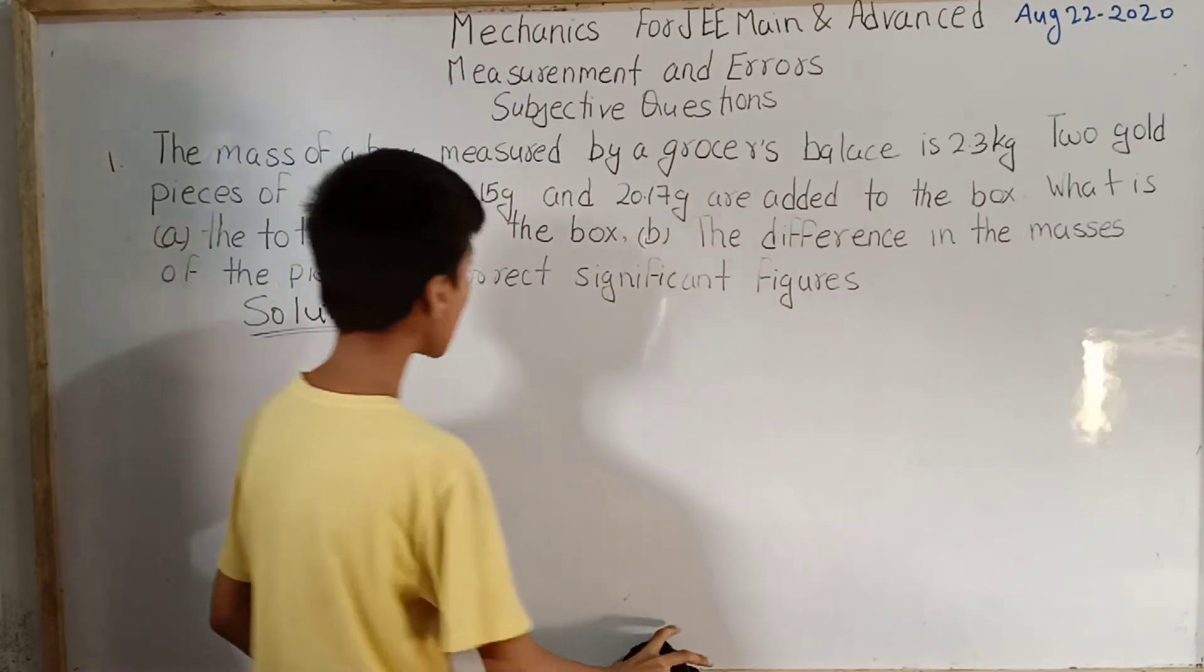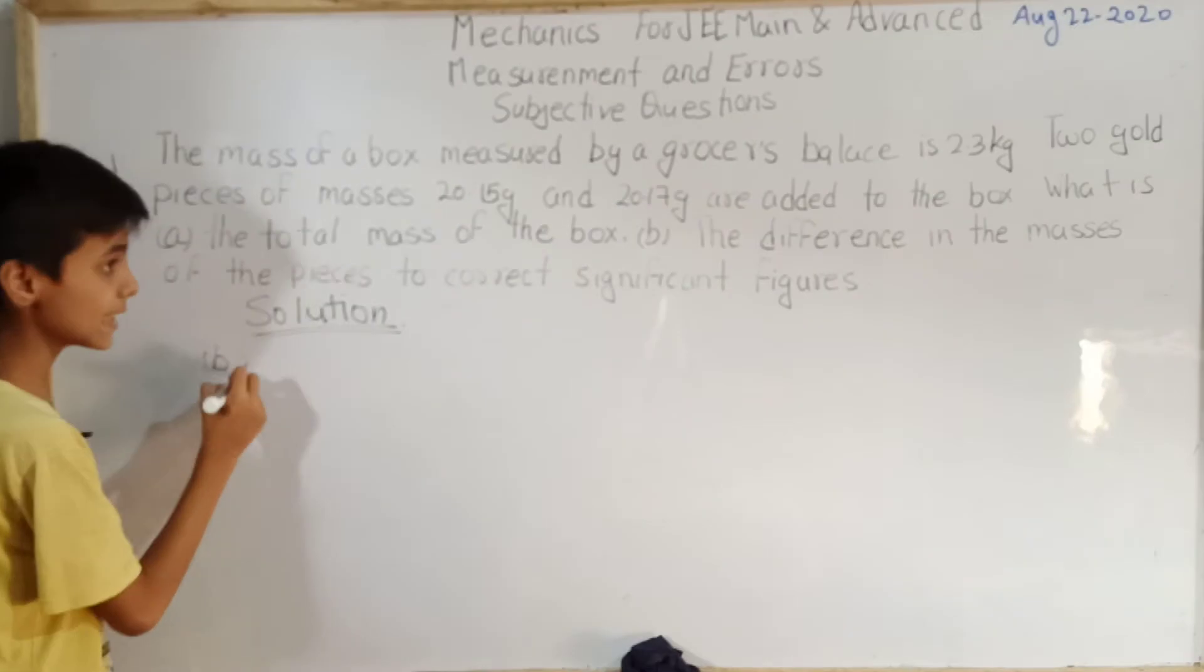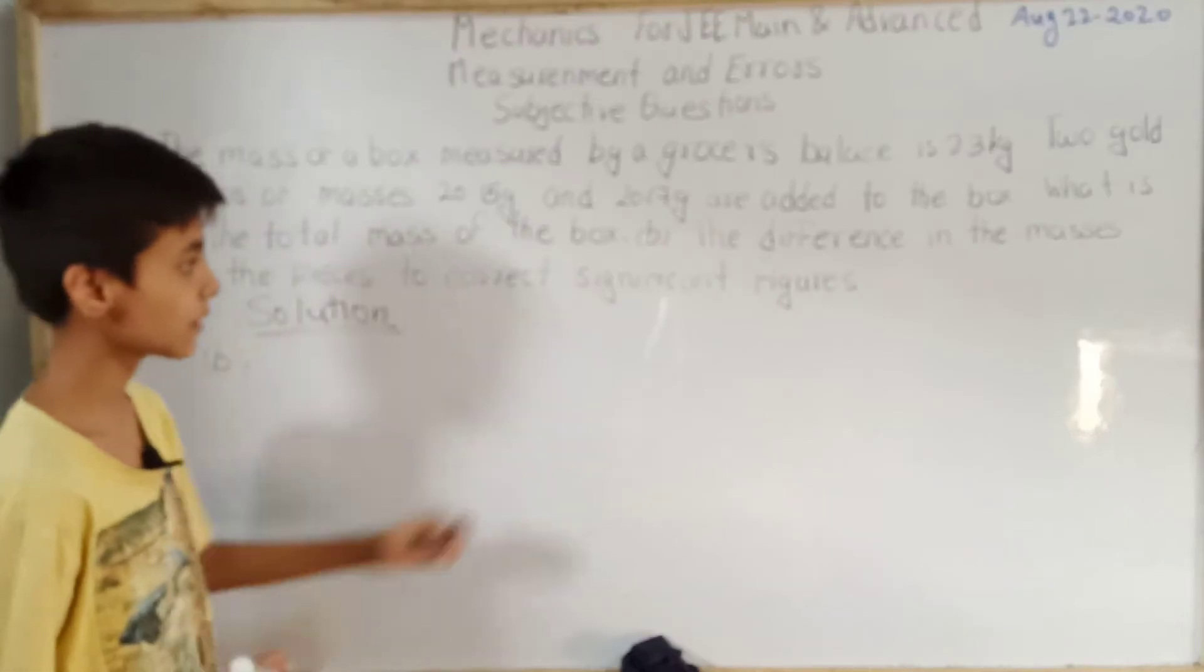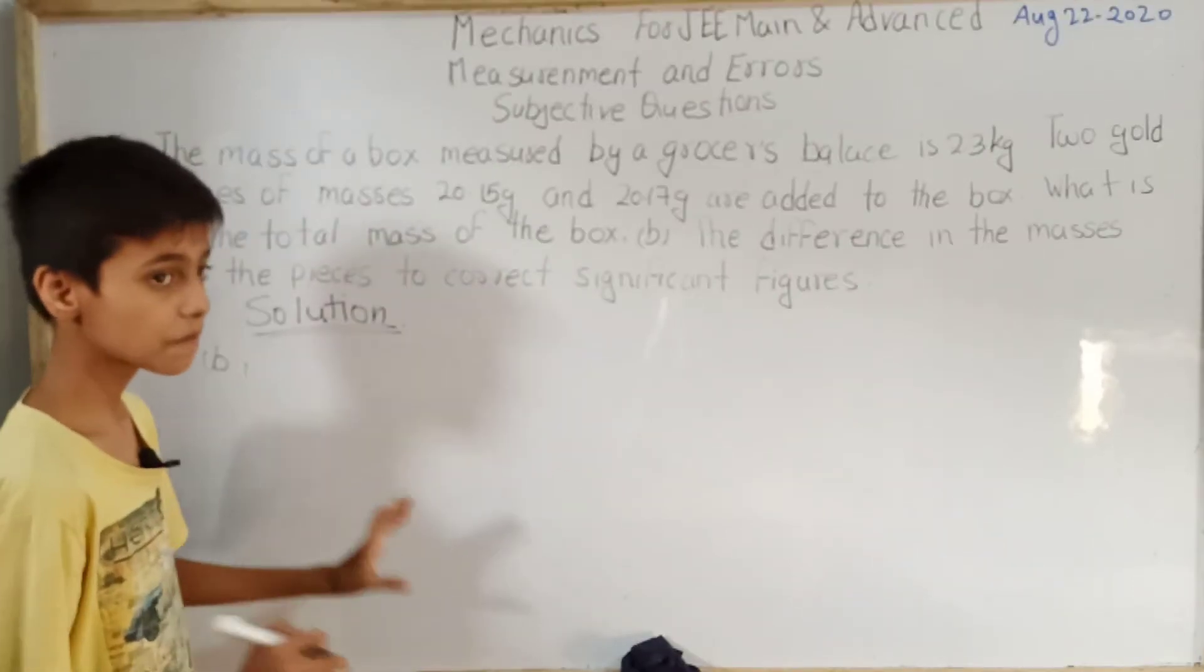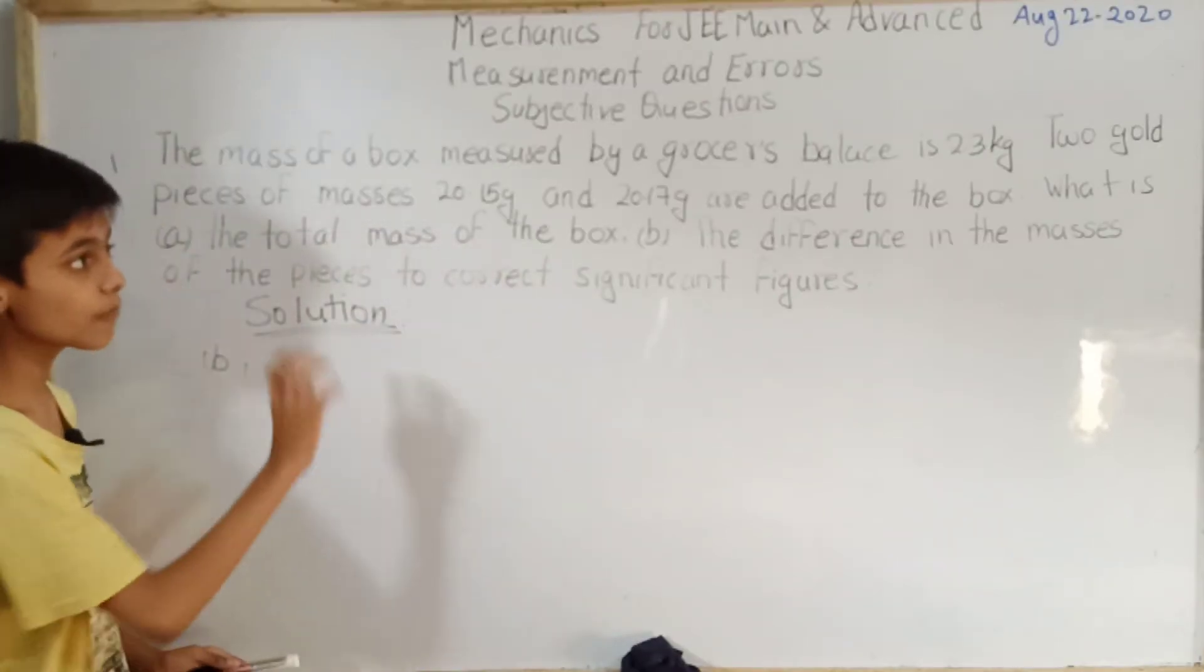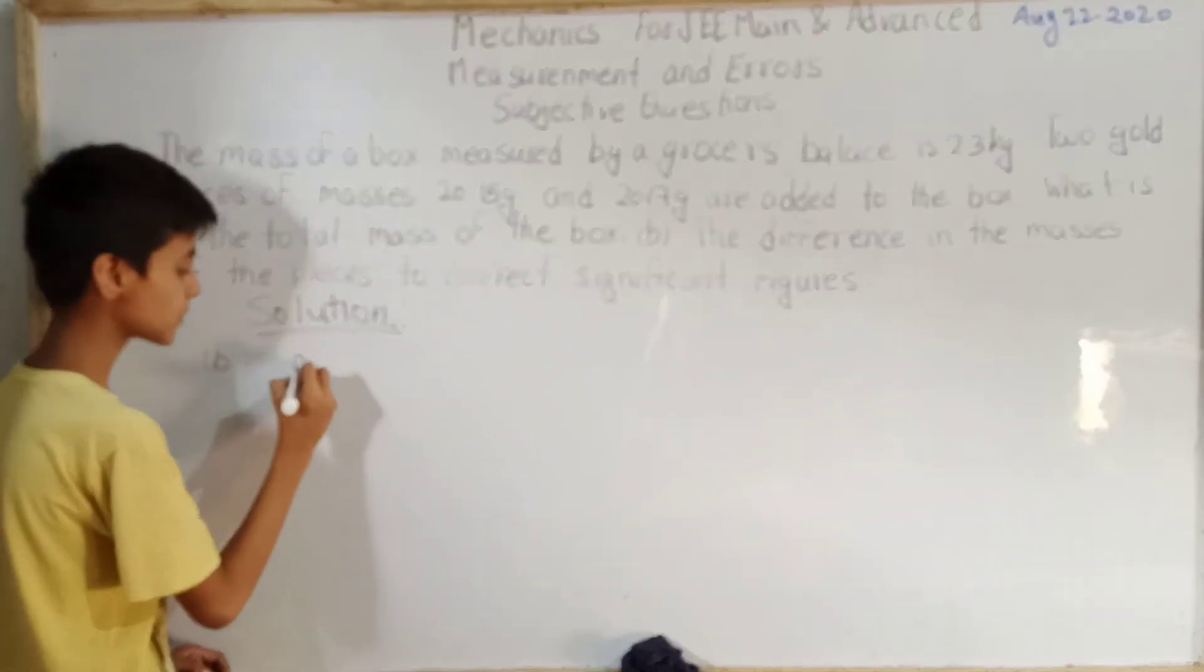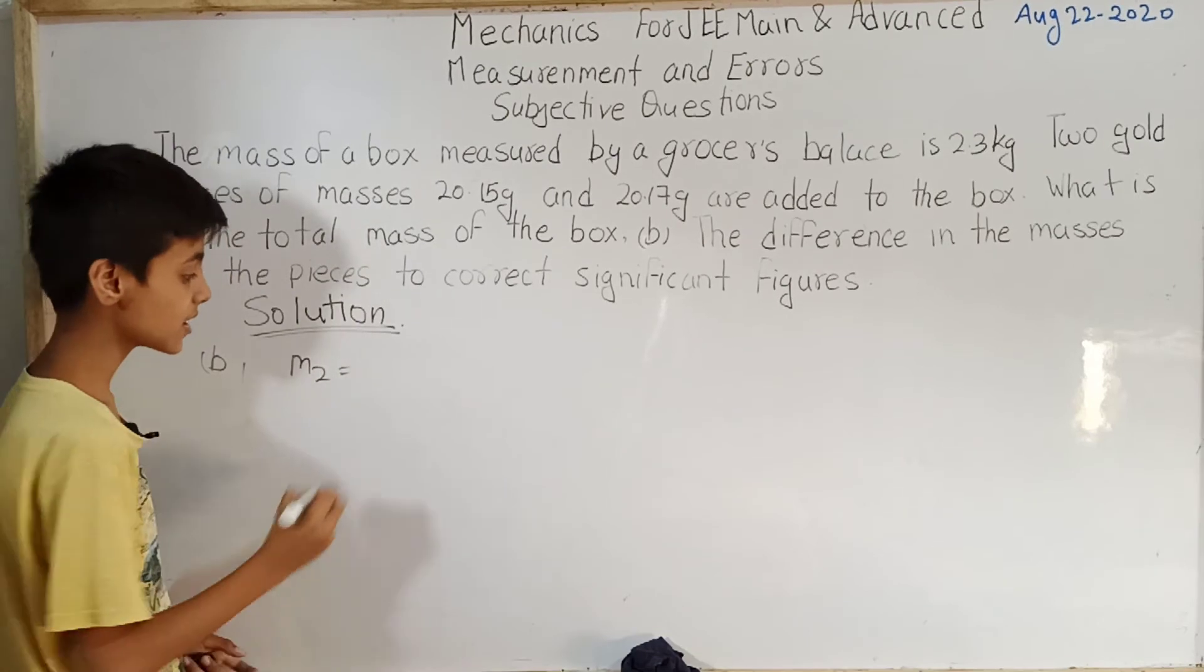Part (b) is the difference in the masses of the pieces to correct significant figures. We have to find out the difference in the masses of the two gold pieces which are m2 and m3.